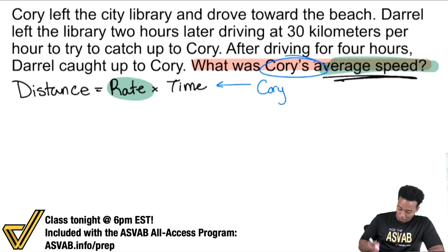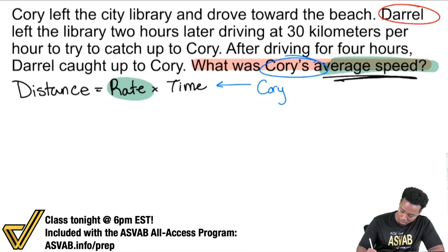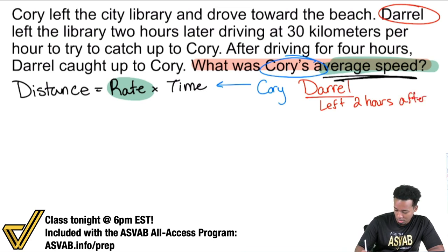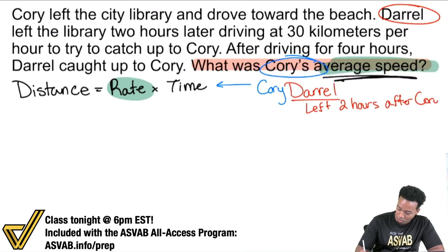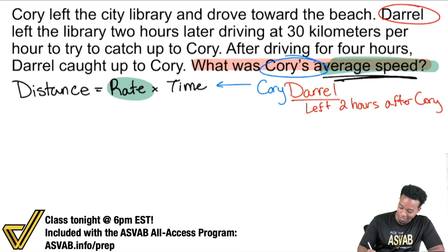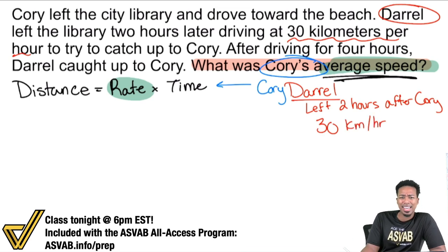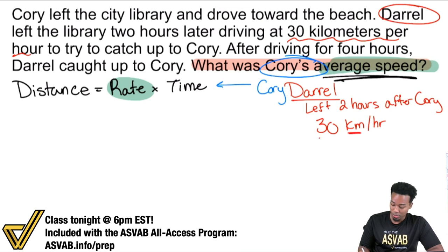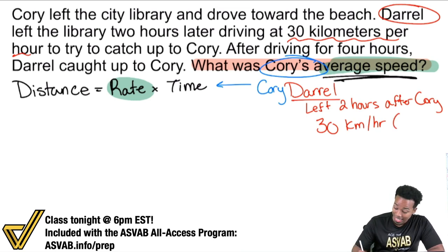So let's go ahead and write that information, making sure we're marking it as Daryl. For Daryl, the information I have is: left two hours after Corey, and 30 kilometers per hour. A rate is a unit that blends two things together — in this case, kilometers and hours. So that is going to be a rate, a speed. We're going to write that down.